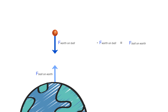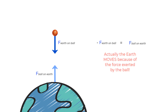Some might ask: if the ball is exerting a force on Earth, why does the Earth not move? The answer will surprise you — the Earth actually does move because of the force exerted by the ball. However, this displacement is so incredibly small that it is hardly noticed. There are calculations in the description below showing by what distance the Earth actually moves when a ball falls towards it.